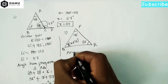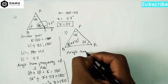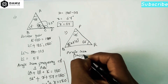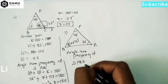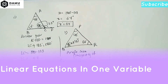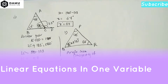Using the angle sum property of triangle PQR: the sum of all the angles will be 180 degrees. Angle P is equal to 45 degrees, angle Q is equal to 3x plus 16, and angle R is 68 degrees. So 45 plus 3x plus 16 plus 68 equals 180 degrees.